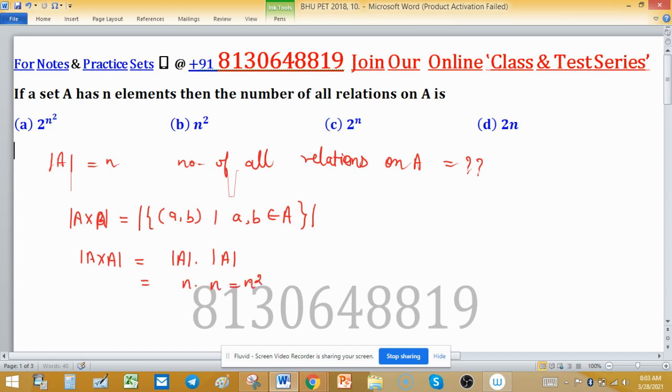So N squared. N squared will be the number of relations that can be formed on a set A. So option B is correct. That's the problem. Thank you.